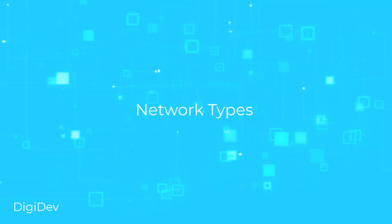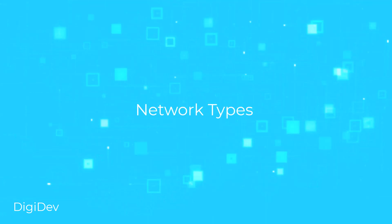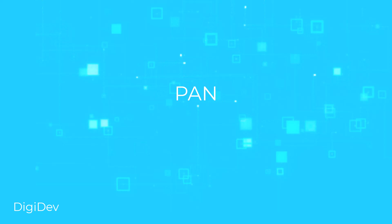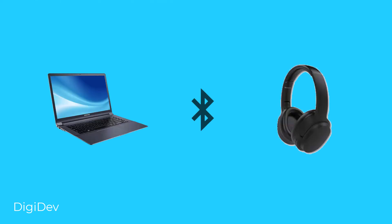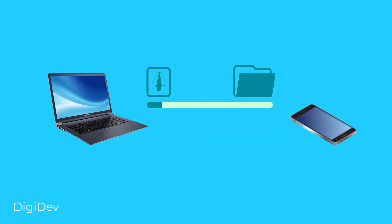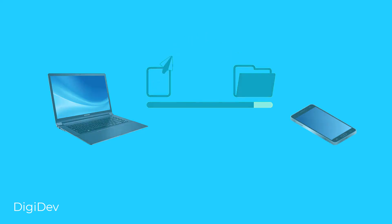First, I think you should know what types of networks there are so we can continue on the more advanced stuff. The first type of network is PAN, which stands for Personal Area Network. PAN is the smallest type of network you can find. For example, when you are using your Bluetooth headphones or sharing a file from your laptop to your smartphone, you are using a PAN network.